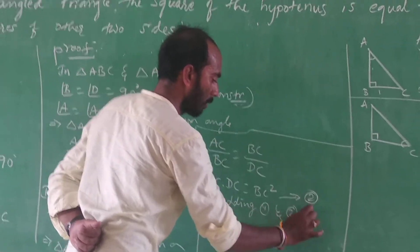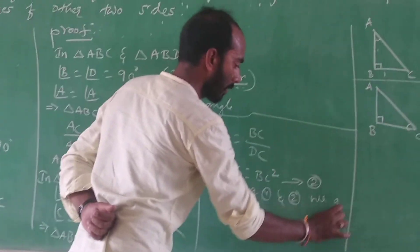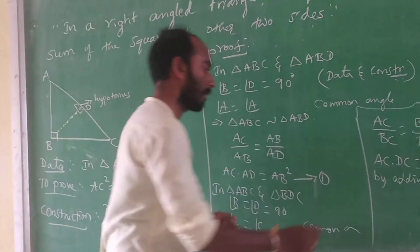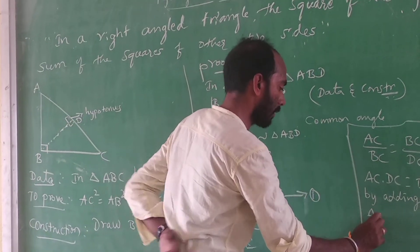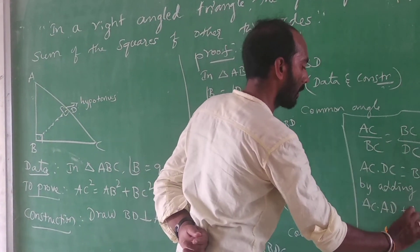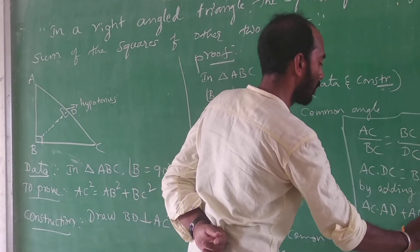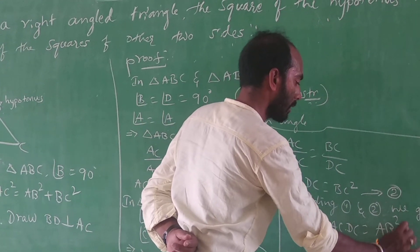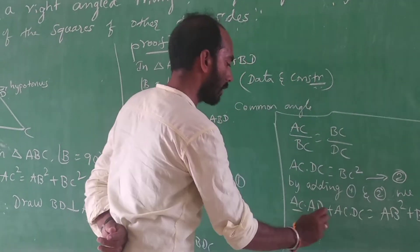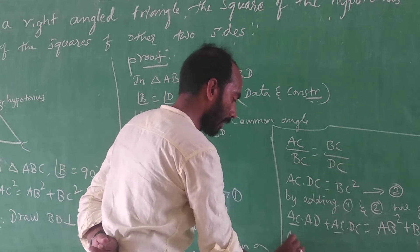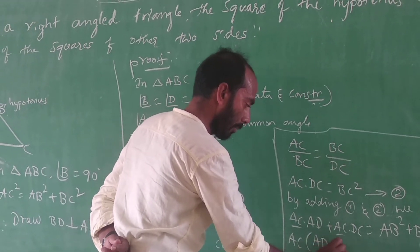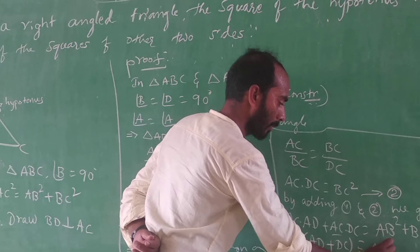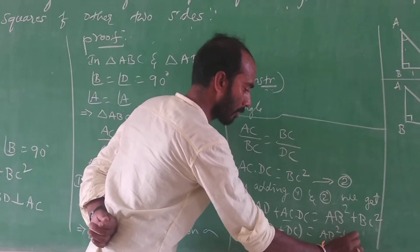By adding equations 1 and 2: AC = AD + DC. This is equal to AB² + BC². In AC, the standard side AC equals AD plus DC, which equals AB² + BC².